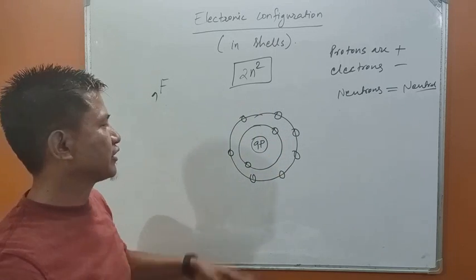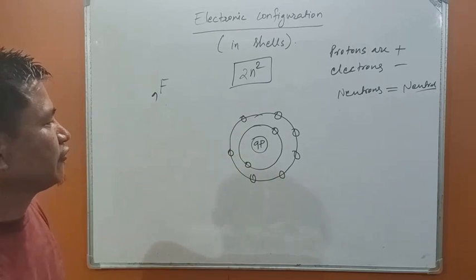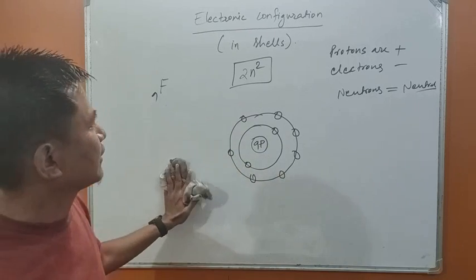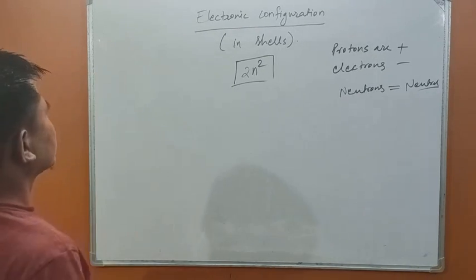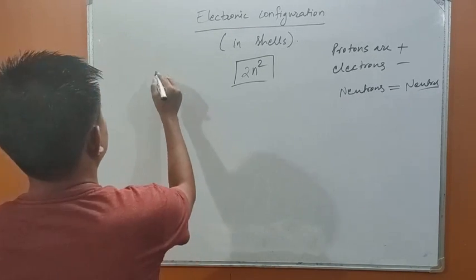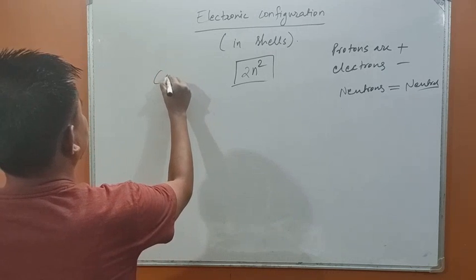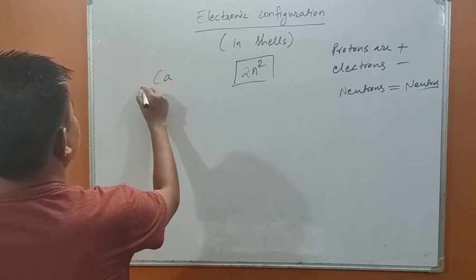This is the electronic configuration of the fluorine atom. Now let's take the example of the calcium atom, atomic number 20.